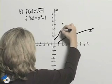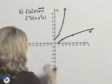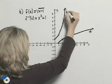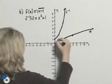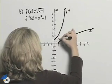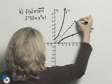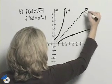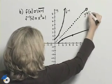I can then connect those points to draw the graph of f inverse. Again, it's worth noting that those two graphs are symmetric about the line y equals x.